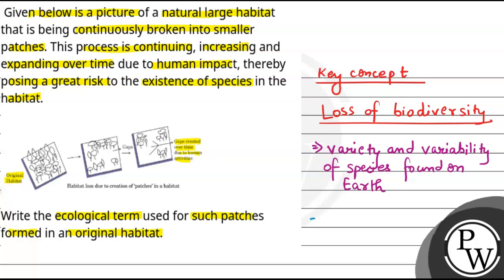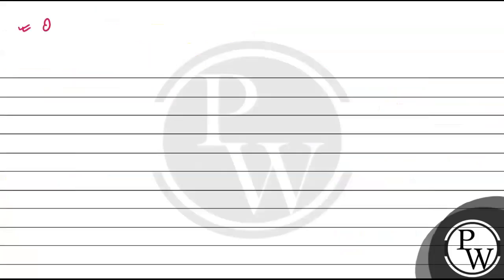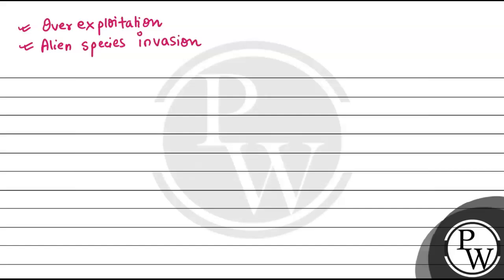Loss of biodiversity means the extinction of species, and there are various causes. Some causes include over-exploitation of species, and alien species invasion. If there are native species in a natural habitat, and one particular species is going to die, then other species are also going to die because they are dependent on each other. Another important cause, which is the most important part, is Habitat Loss and Fragmentation.